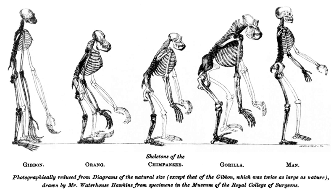Computers became essential in molecular biology when protein sequences became available after Frederick Sanger determined the sequence of insulin in the early 1950s. Comparing multiple sequences manually turned out to be impractical. A pioneer in the field was Margaret Oakley Dayhoff. She compiled one of the first protein sequence databases, initially published as books, and pioneered methods of sequence alignment and molecular evolution.